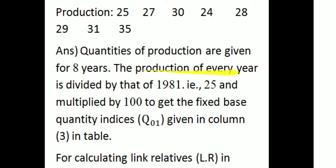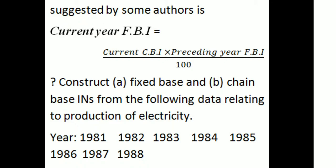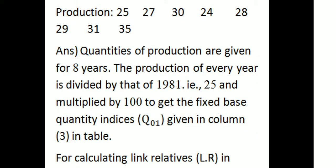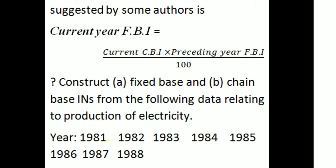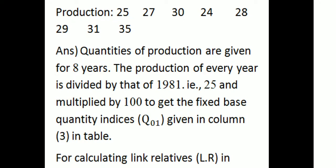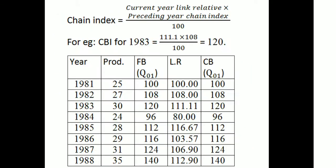Quantities of production are given for 8 years. The production of every year is divided by that of 1981 — that is 25 — and multiplied by 100 to get the Fixed-based Quantity Index Q01. The results are tabulated in Table 3.